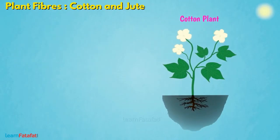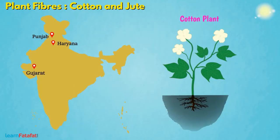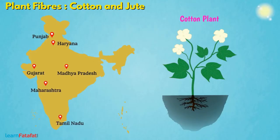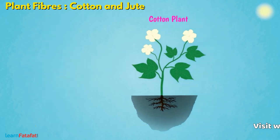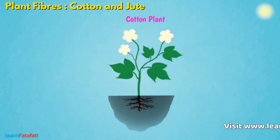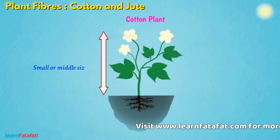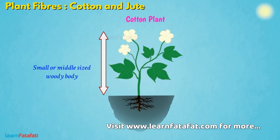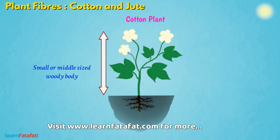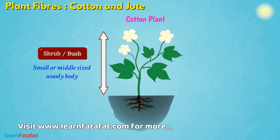It is grown in Punjab, Haryana, Gujarat, Madhya Pradesh, Maharashtra, Tamil Nadu, and Andhra Pradesh states of India. A cotton plant is a small or middle-sized woody body, categorized as a shrub or bush.